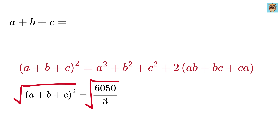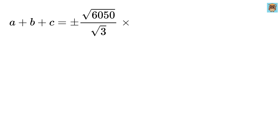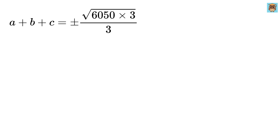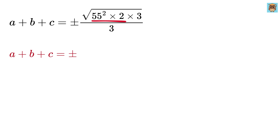Finally, we take the square root on both sides. So a plus b plus c equals plus or minus square root of 6050 over square root of 3. We multiply and divide by square root of 3 to rationalize the denominator, which gives us plus or minus square root of 6050 times 3 over 3. Since 6050 equals 55 squared times 2, this gives us plus or minus 55 times square root of 6 over 3.